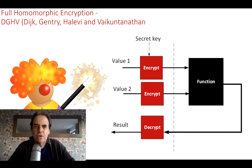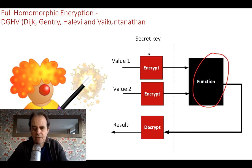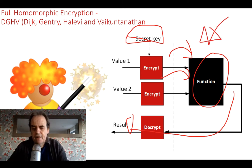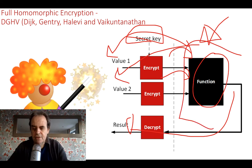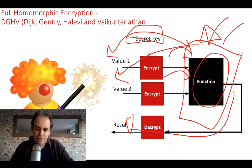There are methods called partial homomorphic encryption that allow some functions like addition and scalar multiplication, but they don't give us the full ability to write different types of logic functions. With DGHV, we have a method where we can encrypt values with a secret key, build a function that operates on the encrypted values, get a result back, and then decrypt using the same secret key. Anyone observing the process shouldn't be able to tell what the original values were — even if the data processor is breached, a hacker cannot find the values or any intermediate calculations.